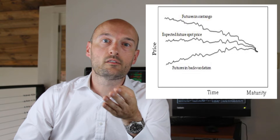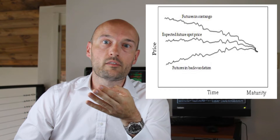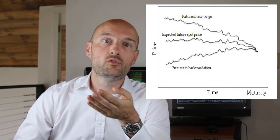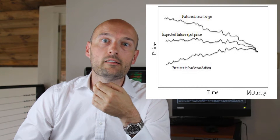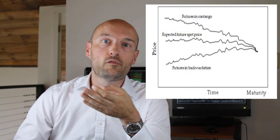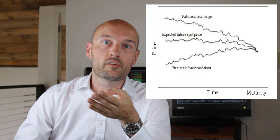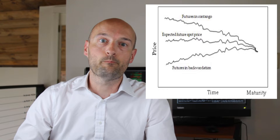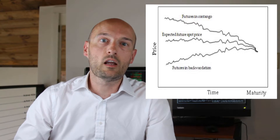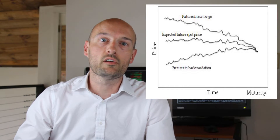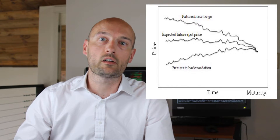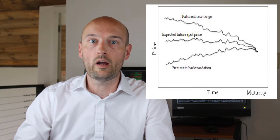Since the forward or futures prices converge with the spot price at maturity, normal backwardation implies that futures prices for a certain maturity are increasing over time. The idea is that hedgers of these commodities are essentially willing to pay speculators to take the risk of owning the commodity away from them.